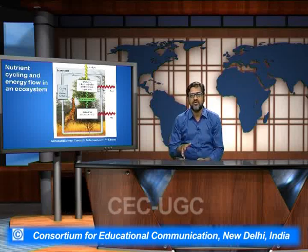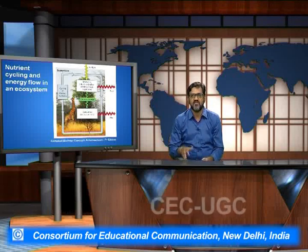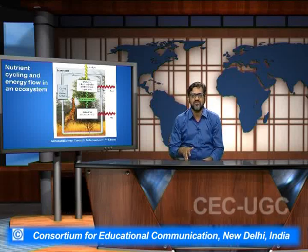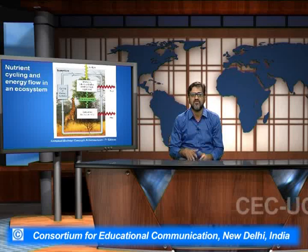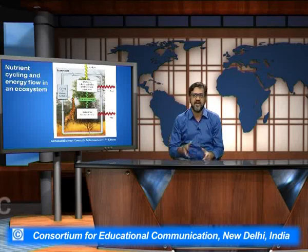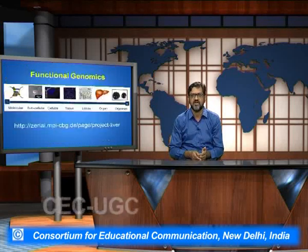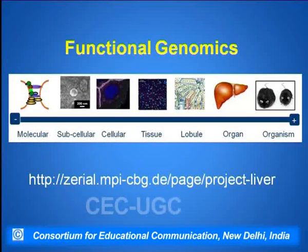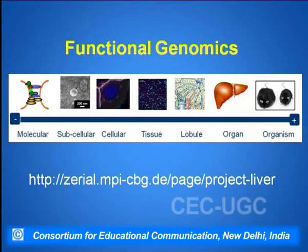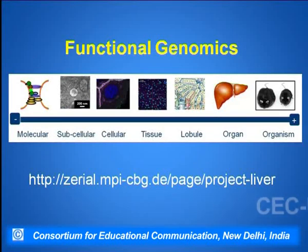All of us know about the ecosystem, how exactly in an ecosystem the various producers and consumers are playing an important part and role. Similarly, a cell structure is an amalgamation of a number of combinations.